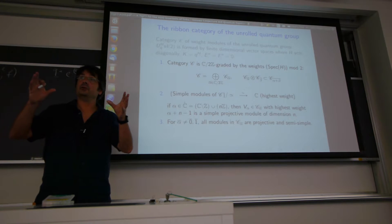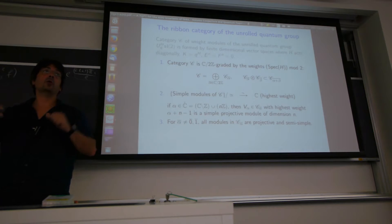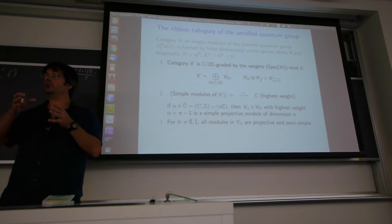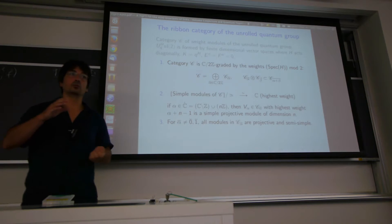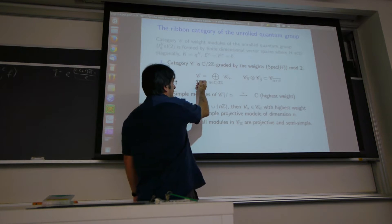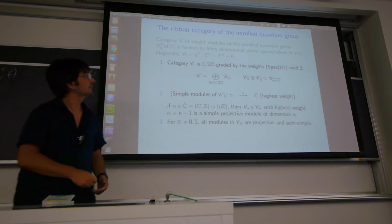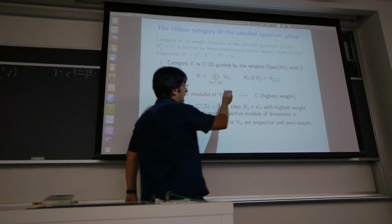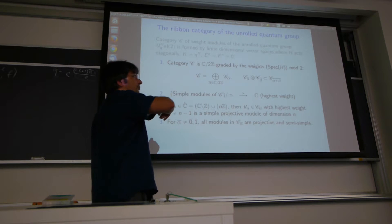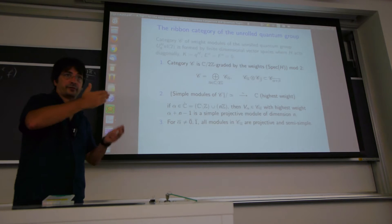Here are pictures of these categories. When you have a representation, you can split it into a direct sum of homogeneous representations. A homogeneous representation is one in which all weights are congruent modulo 2. This gives a grading of the category: any object is a direct sum of objects in subcategories indexed by the class mod 2. This grading is compatible with the tensor product due to the coproduct structure, so the degrees of two representations add.